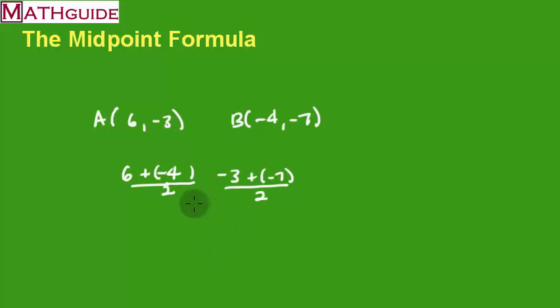Let's actually do this. So, six plus negative four, that is two. Two divided by two is one. Let's take negative three plus negative seven. That is negative ten, which we have to divide by two, which is negative five.